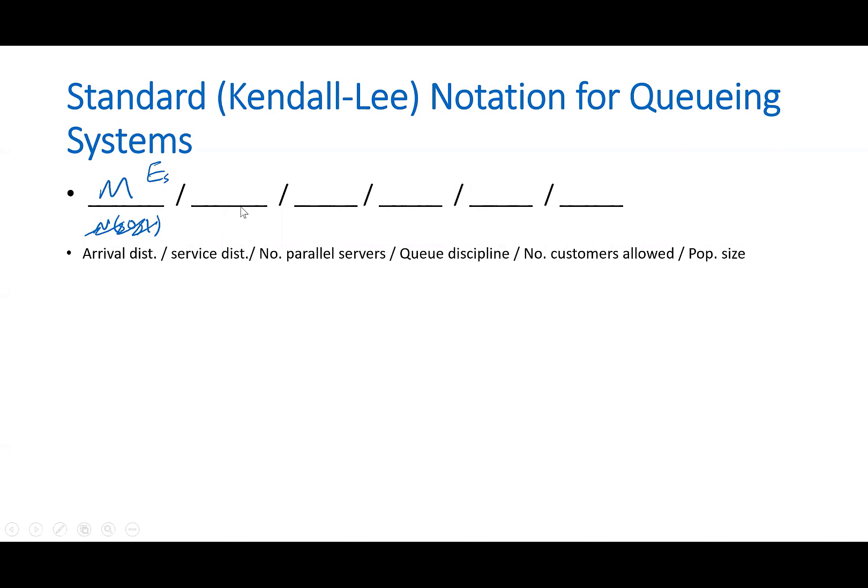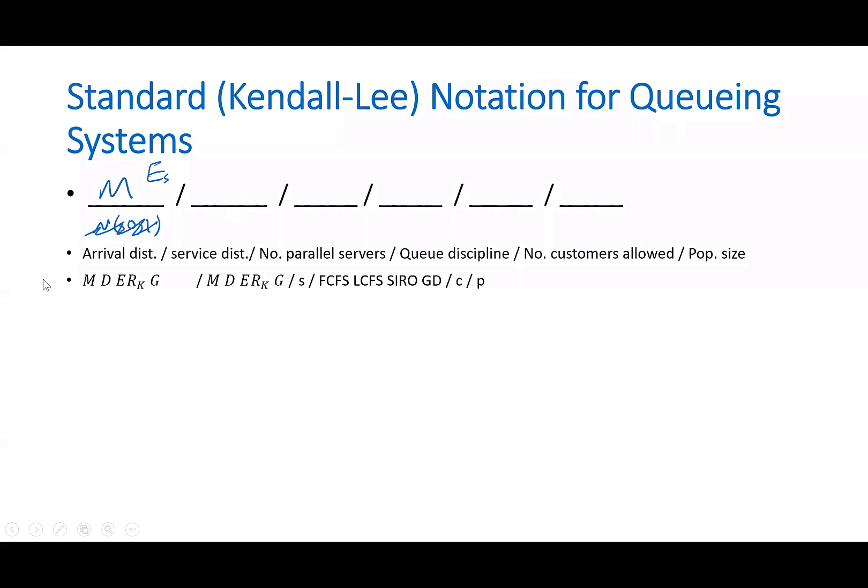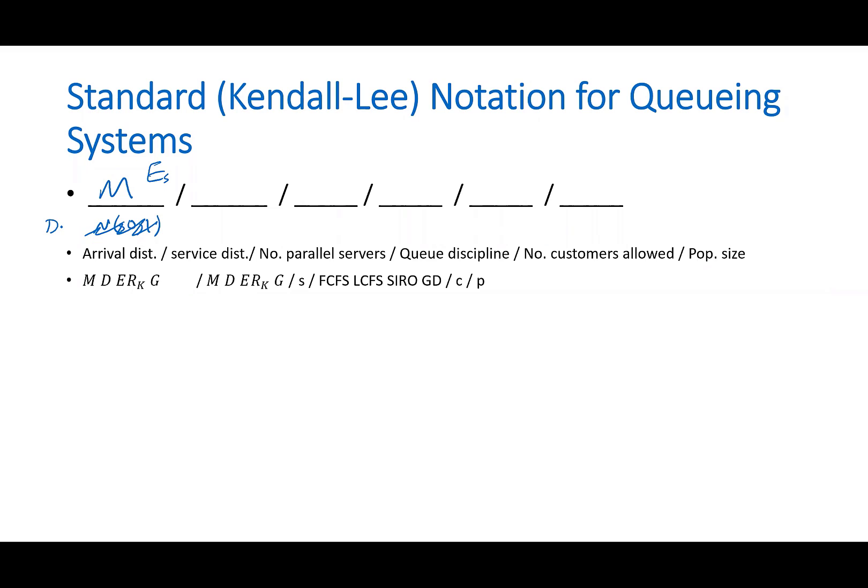The next one talks about the service distribution. The first one could be M, it could be D, it could be Erlang, it could be G. M stands for memoryless. D stands for deterministic, which means I can put, for example, if I put D equals 5, it means inter-arrival is always exactly 5. Every 5 minutes, exactly, you get a new part coming. That has applications in automated manufacturing.